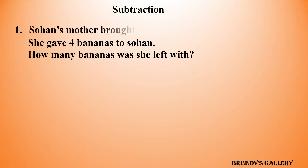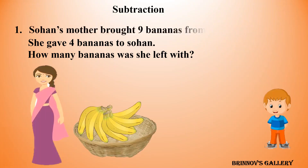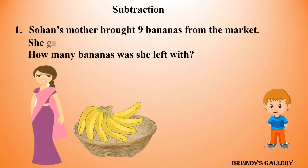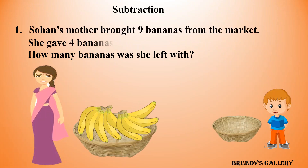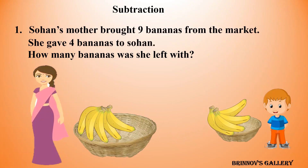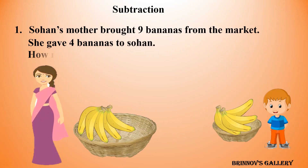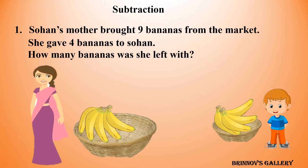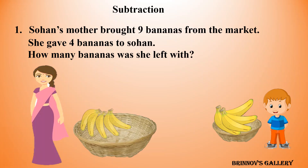Sohan's mother brought 9 bananas from the market. She gave 4 bananas to Sohan. How many bananas was she left with? One, two, three, four, five. Five bananas.